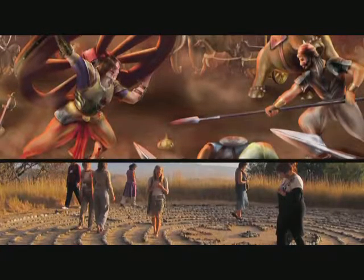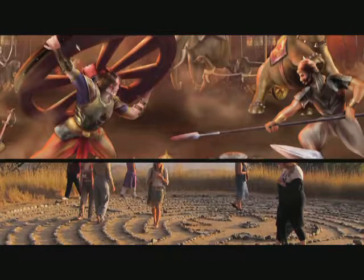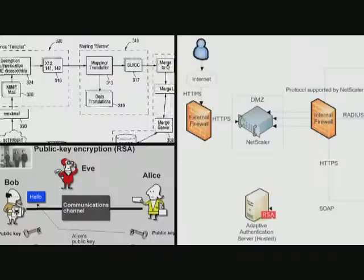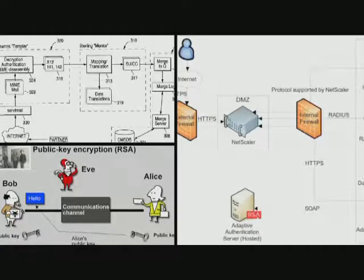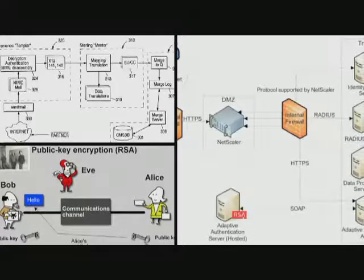A bit like the famous Chakravyuha that proved to be Abhimanyu's downfall in the Mahabharata. He was able to go in one way but was unable to exit on the other side. Anyway, in mathematics, such one-way functions are at the bottom of all public key encryption. Let me tell it as simply as possible.